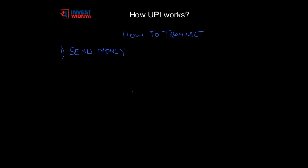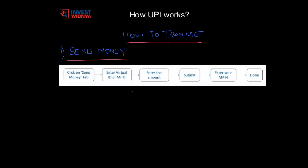Now we will discuss how to transact using UPI, starting with how to send money. Click on the 'Send Money' tab on your UPI app and then enter the virtual ID of Mr. B, the person whom you want to send money to. Enter the amount you want to send and hit submit. The app will take you to the NPCI page where you have to enter your MPIN, and the amount will be transferred immediately.